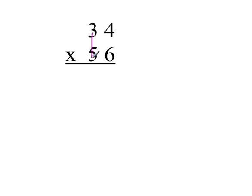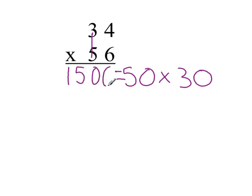So we'll draw a line and we'll show that that's 50 times 30, and that equals 1,500. And then we'll multiply 4 times 6, and that is 24.